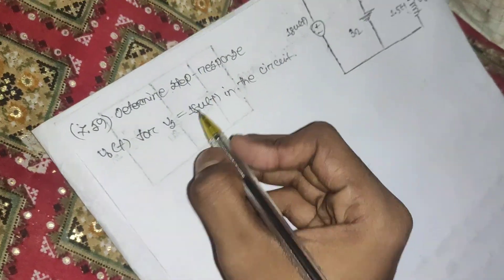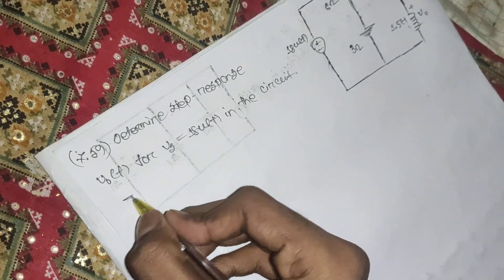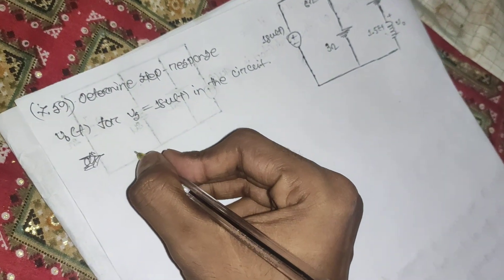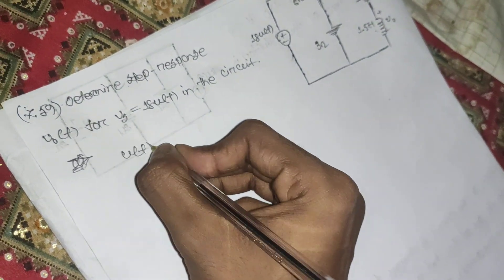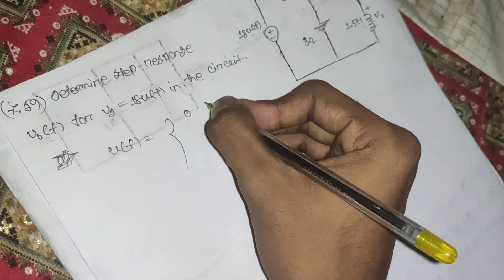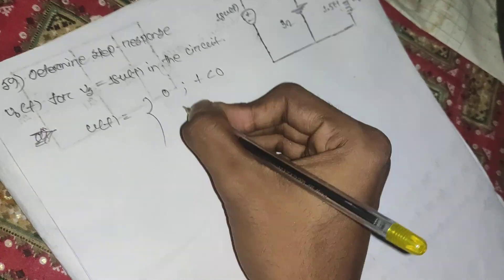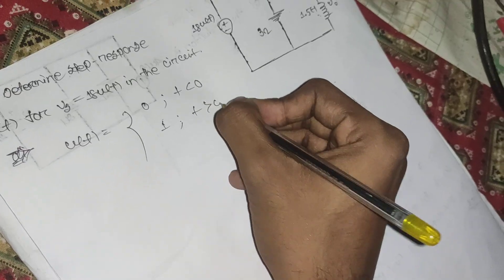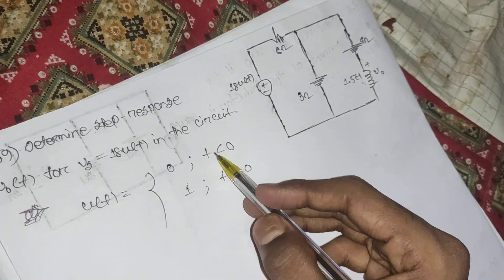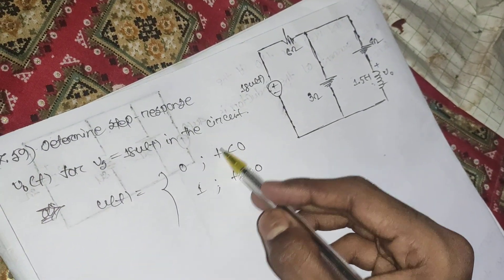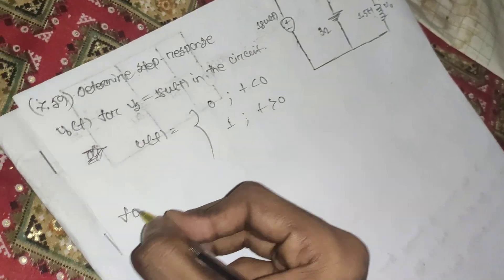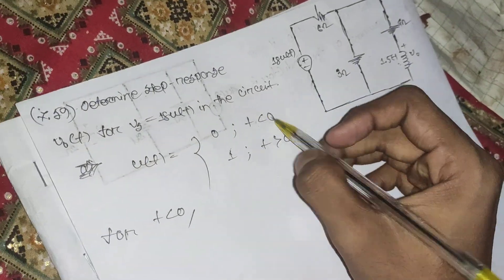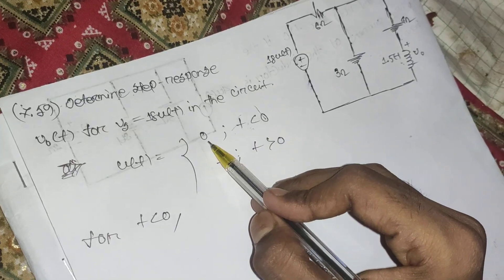From singularity functions, the unit step function u(t) equals 0 when t is less than 0, and 1 when t is greater than 0. So using this condition, for t less than 0, u(t) equals 0.